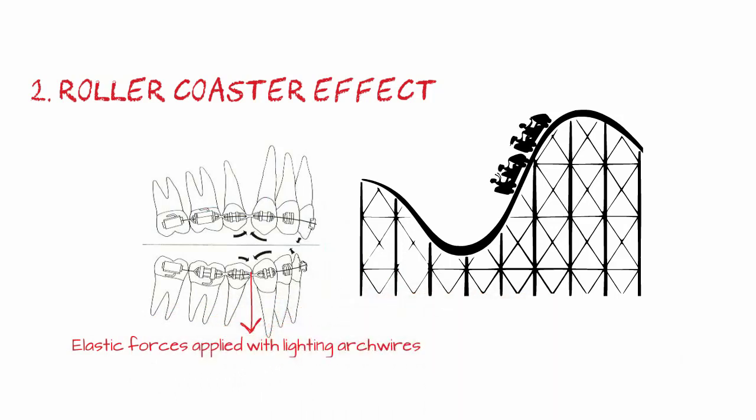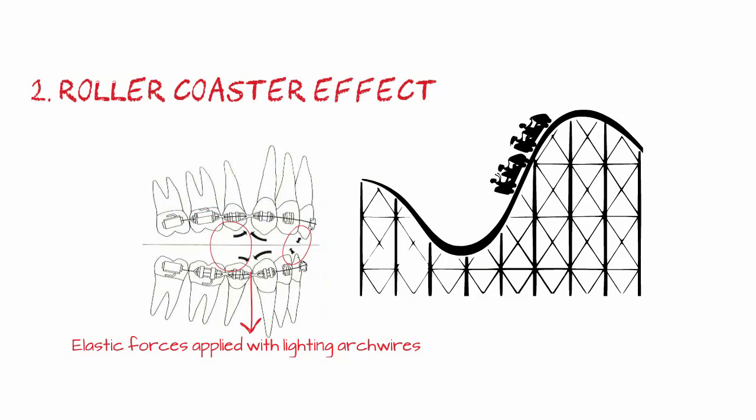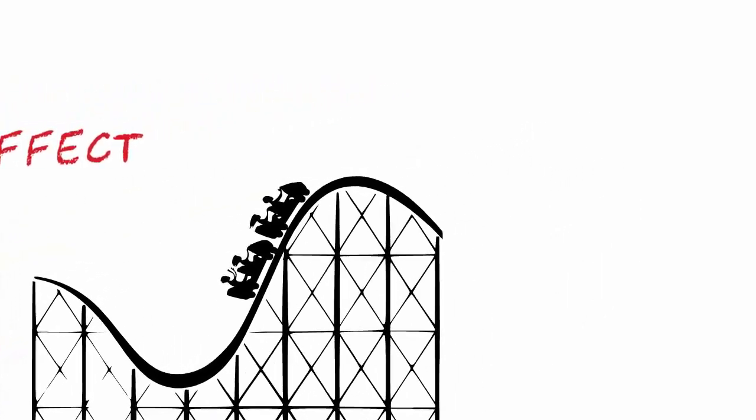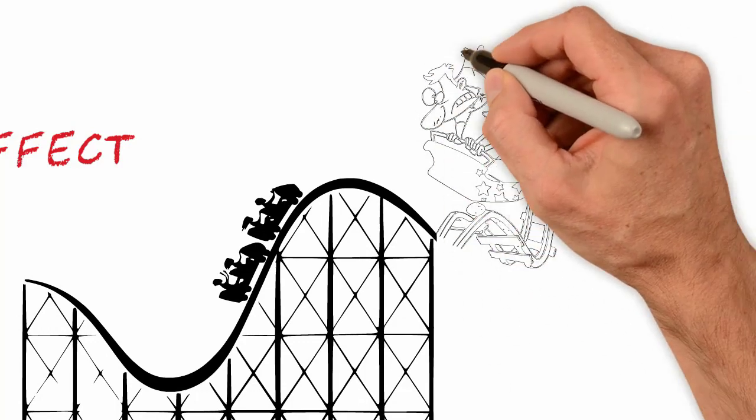A number of side effects can occur, such as deepening the anterior bite, opening the lateral bite, and unwanted tippings and rotations into the extraction sites. The set of iatrogenic movements can be called the roller coaster effect. Some people may even enjoy this fun in real life, but in orthodontics, this effect is not fun at all.